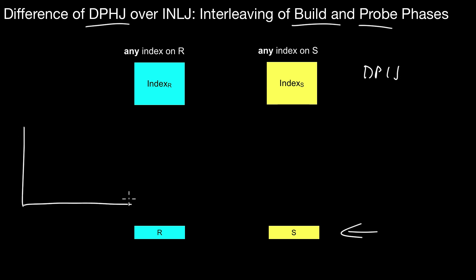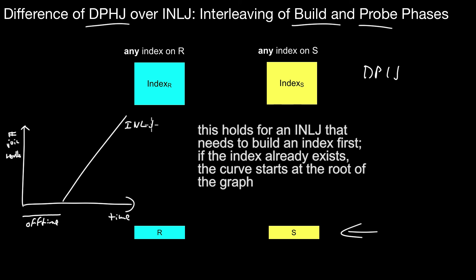Quickly producing join results. Assume you have a graph like that. Here is time. Here I depict the number of join results. What happens in the standard index nested loop join? You keep on drawing from one of the inputs. You need to build up the index. That takes time. You have a certain lag, a certain off time where the index is built. Only after the index was entirely built you keep on drawing data from the other inputs. Then you keep on producing join results.